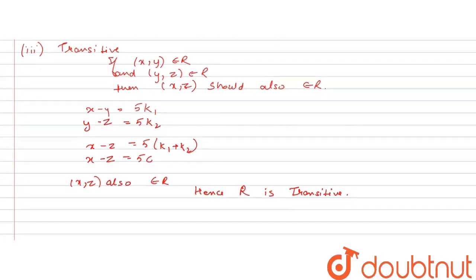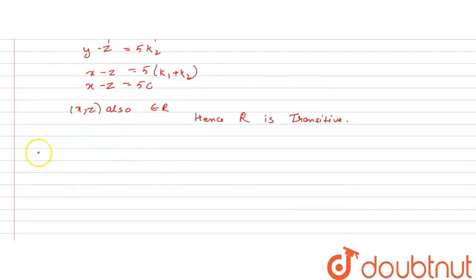So, from 1, 2 and 3, what do we get? From 1, 2 and 3, we get R is an equivalence relation.